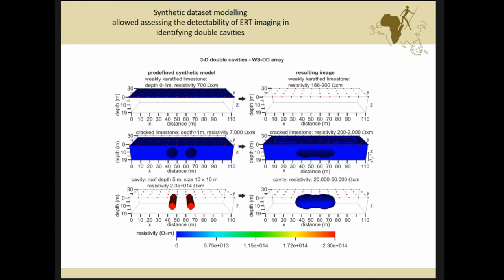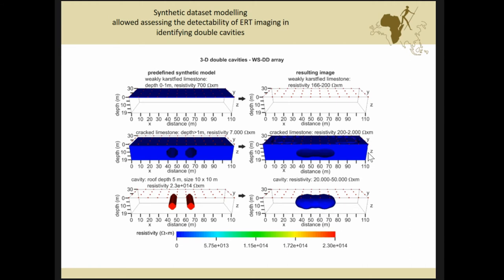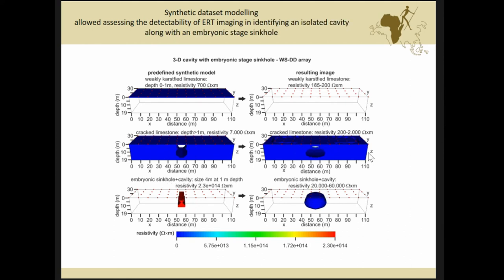You can compare this with this very strong underestimation, but that's typical for the inversion process. The next problem is, are we able to detect two single separated cavities with the same features? No. We are able to detect only a single feature that is very wider, with the same strong underestimation of the resistivity.